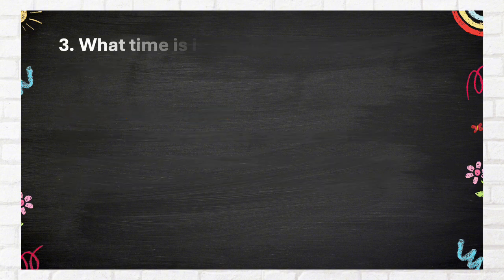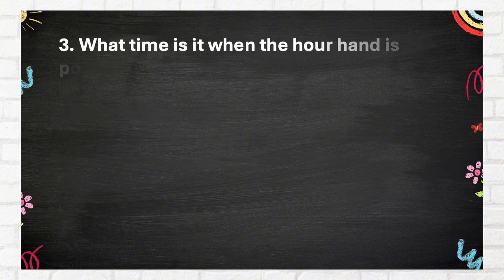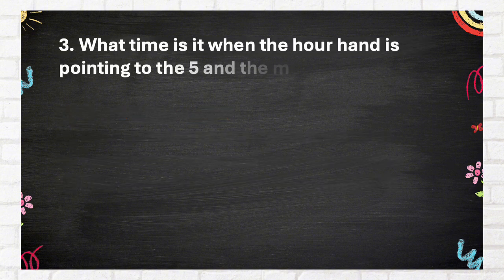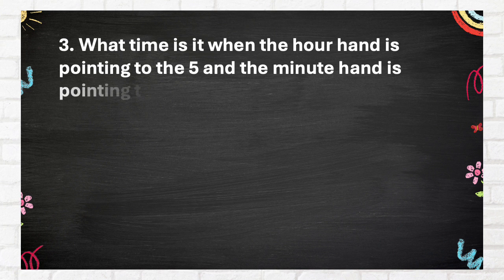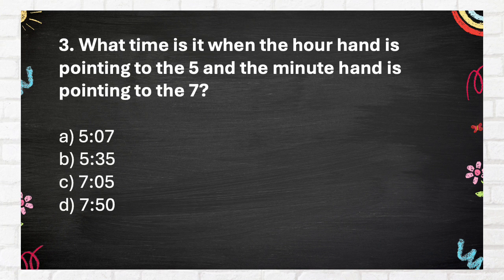Question number 3. What time is it when the hour hand is pointing to the 5 and the minute hand is pointing to the 7? Again, what time is it when the hour hand is pointing to the 5 and the minute hand is pointing to the 7?